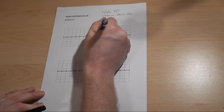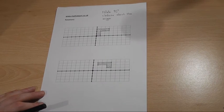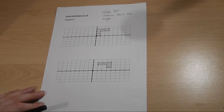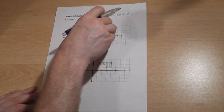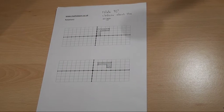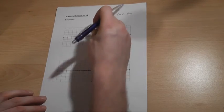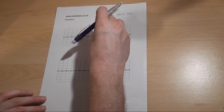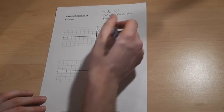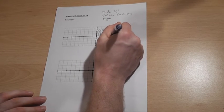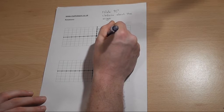Now the origin is our pivot, and basically this shape is going to pivot around by 90 degrees, so it will gradually swing around and end up looking like so.